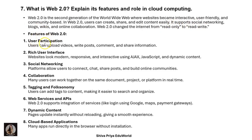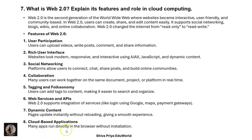The features of Web 2.0 are: user participation — users can upload videos, write posts, comment, and share information; rich user interface — websites look modern, responsive, and interactive using AJAX, JavaScript, and dynamic content; social networking — platforms allow users to connect, chat, comment, and share posts; collaboration — many users can work together on the same document or project in real time; folksonomy — users can add tags to content to make it easier to search and organize; web services and apps — Web 2.0 supports integration of services like Google login, maps, and payment gateways; dynamic content — pages update instantly without reloading; and cloud-based applications — many apps run directly in the browser without installation.